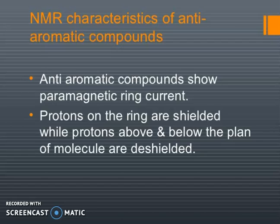NMR characteristics of anti-aromatic compounds: anti-aromatic compounds show a paramagnetic ring current. Protons on the ring are shielded, while protons above and below the plane of the molecule are deshielded.